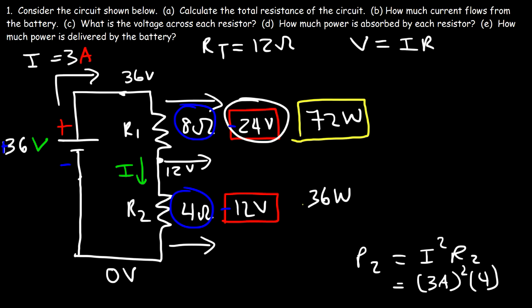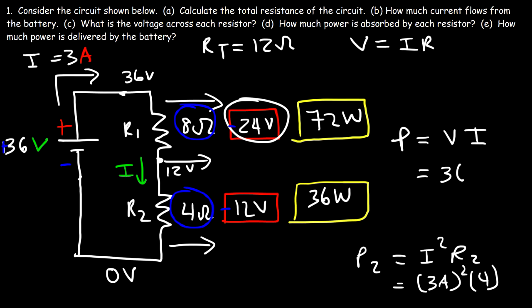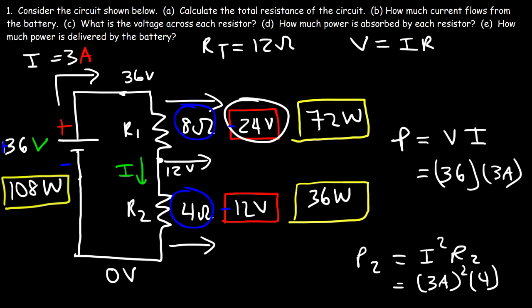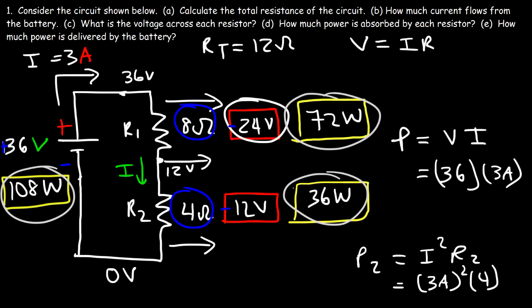Now let's calculate the power delivered by the battery. Power is also voltage times current: the battery voltage is 36 volts and the current leaving it is 3 amps, so 36 times 3 gives 108 watts. Notice that the power delivered by the battery equals the sum of the power absorbed by all the resistors: 72 plus 36 is 108. This is due to the law of conservation of energy — the rate at which the battery transfers energy equals the rate at which all the elements in the circuit consume it.